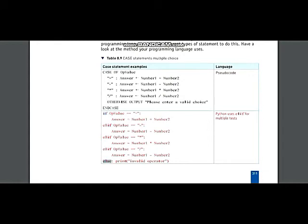In Python, we use if, elif, and else. For the first option we use if, for the rest of the options we use elif, and for the last option we use else. If the user presses plus, it will be saved inside a variable called 'of_value', the two numbers will be added, and the answer will be saved in 'answer'. If the user presses minus, minus will be saved in 'of_value' and the second number will be subtracted from the first, with the answer saved in 'answer'.